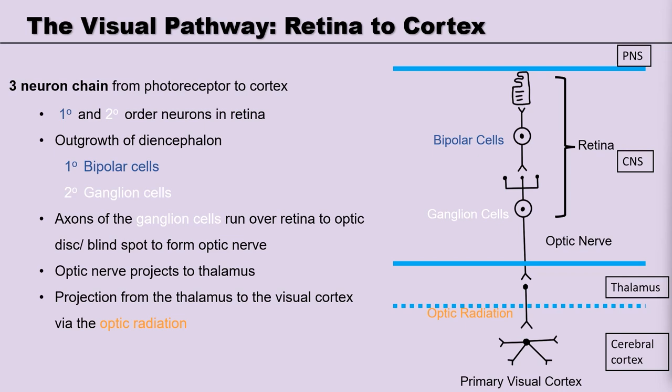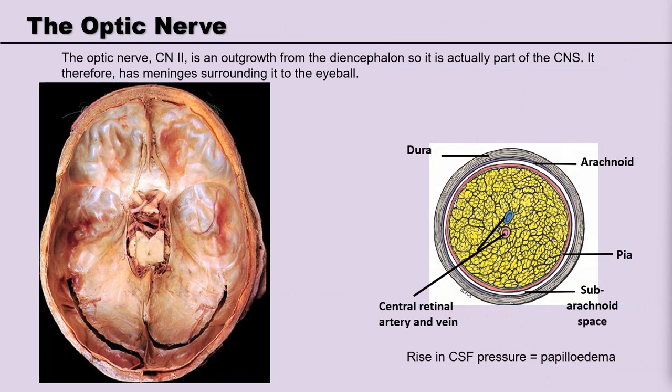Let's break each part of this visual pathway down. The optic nerve is constructed of axons of the second order ganglion cells. As these are continuous with the diencephalon and part of the central nervous system, they too have a meninges wrapped around their length. Therefore, they also have cerebrospinal fluid in the subarachnoid space. Travelling through the core of the optic nerve, we also have a central retinal artery and vein.